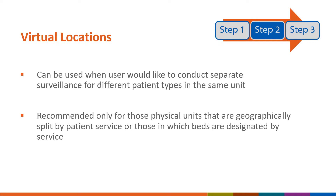Virtual locations are used in NHSN when a patient care area is unable to meet the 80% rule for a location designation, but the facility still wants to report its surveillance data for each of the major patient types in that unit. If your facility is capturing patient dates and device dates electronically, it is recommended to talk to the IT department or electronic health record system administrator to discuss the possibility of splitting this data to accommodate virtual locations.